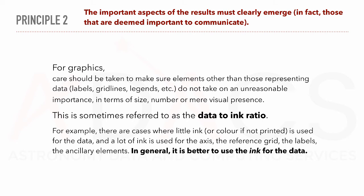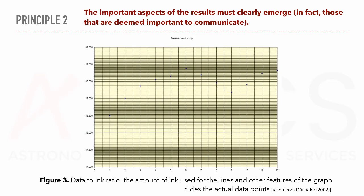In general, it is better to use the ink for the data. Here is an example of a bad data to ink ratio. The amount of ink used for the lines and other features of the graph hides the actual data points.